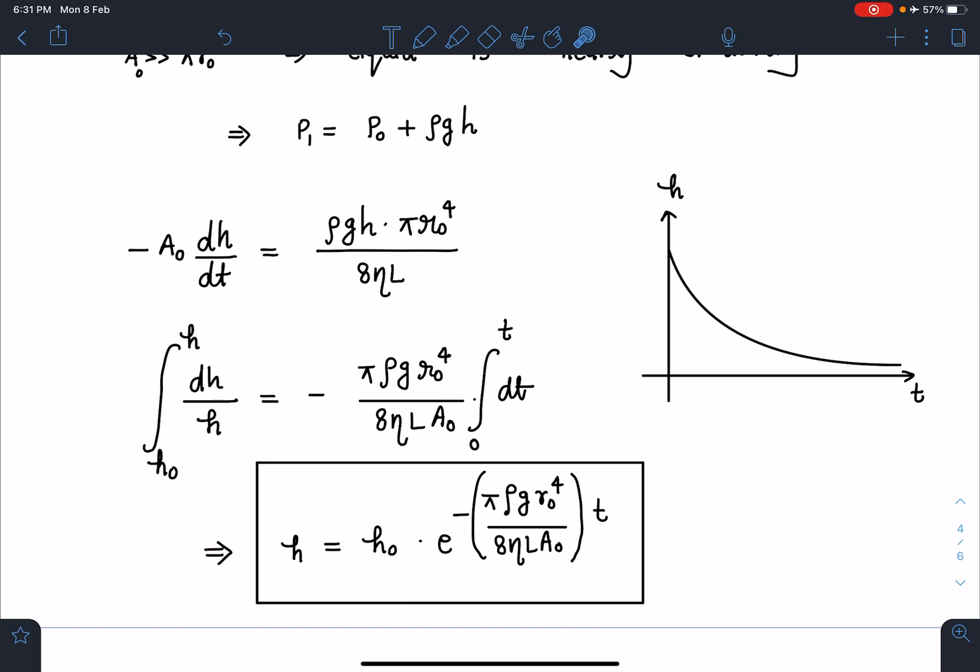If I remove that ln, it will come in the exponential power. Here I am not explaining the calculation part; I think you can easily manage that part. So I am going to get h = h₀ e^(-(πρg r₀⁴)/(8ηL A₀) × t). This is going to be the answer for h as a function of time t.